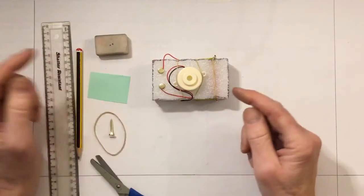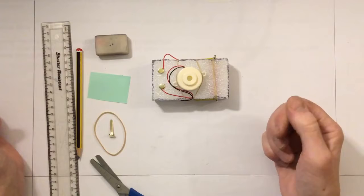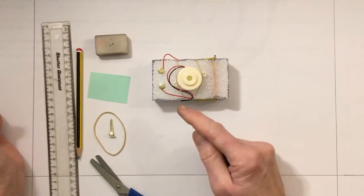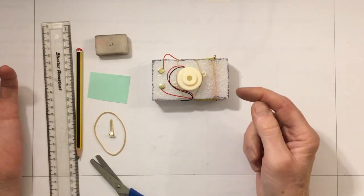We know that the plastic on the wire, we'll call it insulation, stops electricity from traveling. The wire inside is made of metal and that's the conductor, and the plastic on the outside is the insulator.